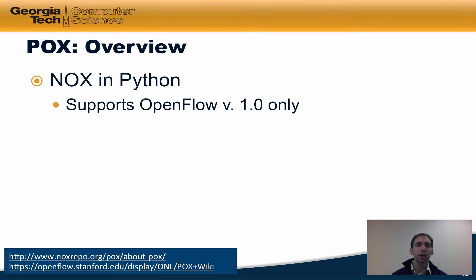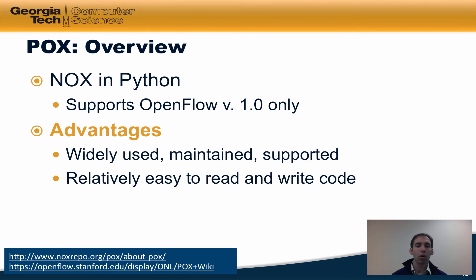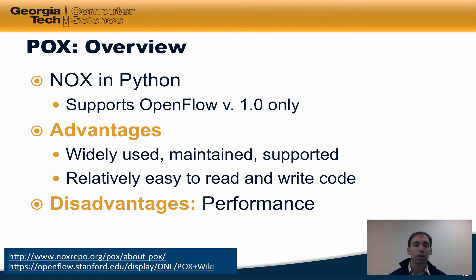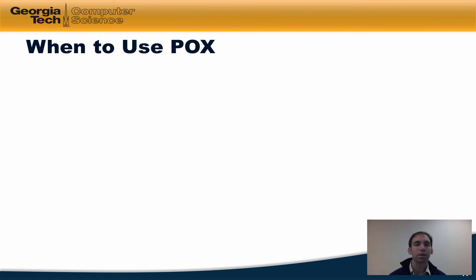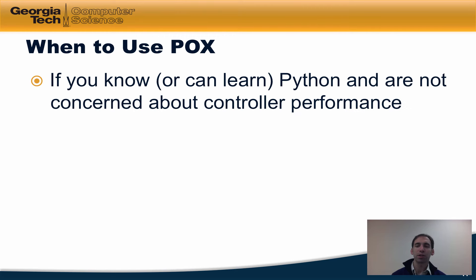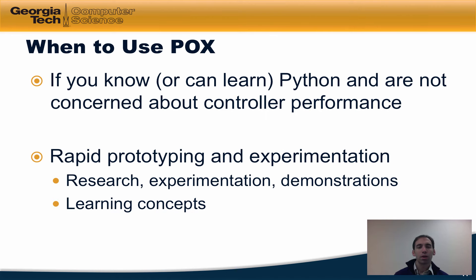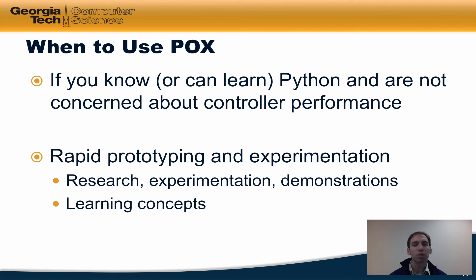POX is essentially NOX in Python. It supports OpenFlow version 1.0 only. Its advantages include being widely used, maintained, and supported, and it's relatively easy to read and write code. The disadvantage is that because it's implemented in Python, performance is slower than NOX. You might use POX if you know or can easily learn Python and aren't concerned about controller performance. It's very useful for rapid prototyping, experimentation, research, demonstrations, and learning SDN concepts — which is why it's the main controller used in the assignments in this course.